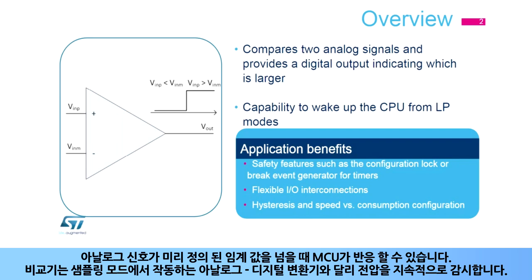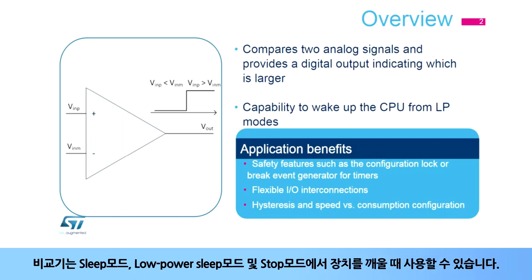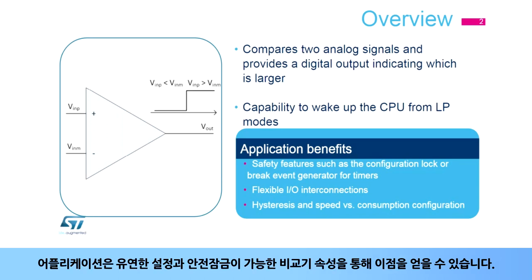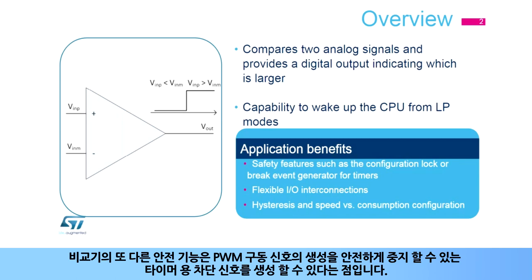The comparator continuously monitors voltage, in contrast to an analog-to-digital converter which operates in sampled mode. The comparator can be used to wake up devices from sleep, low power sleep, and stop modes. Applications can benefit from the flexible configuration of comparator properties, which can be locked for safety reasons. Another safety feature is its ability to generate a brake signal for timers, allowing it to safely stop the generation of PWM driving signals.